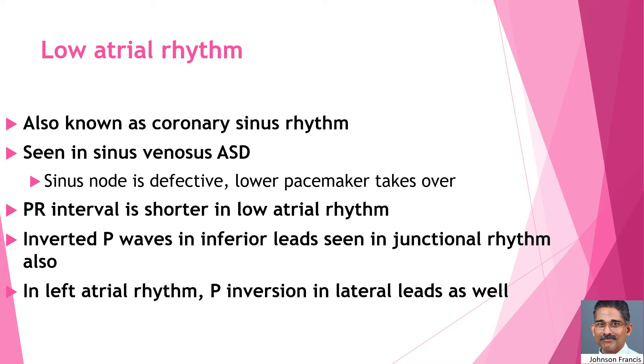The PR interval is shorter in low atrial rhythm. Inverted P waves can also be seen in junctional rhythm.